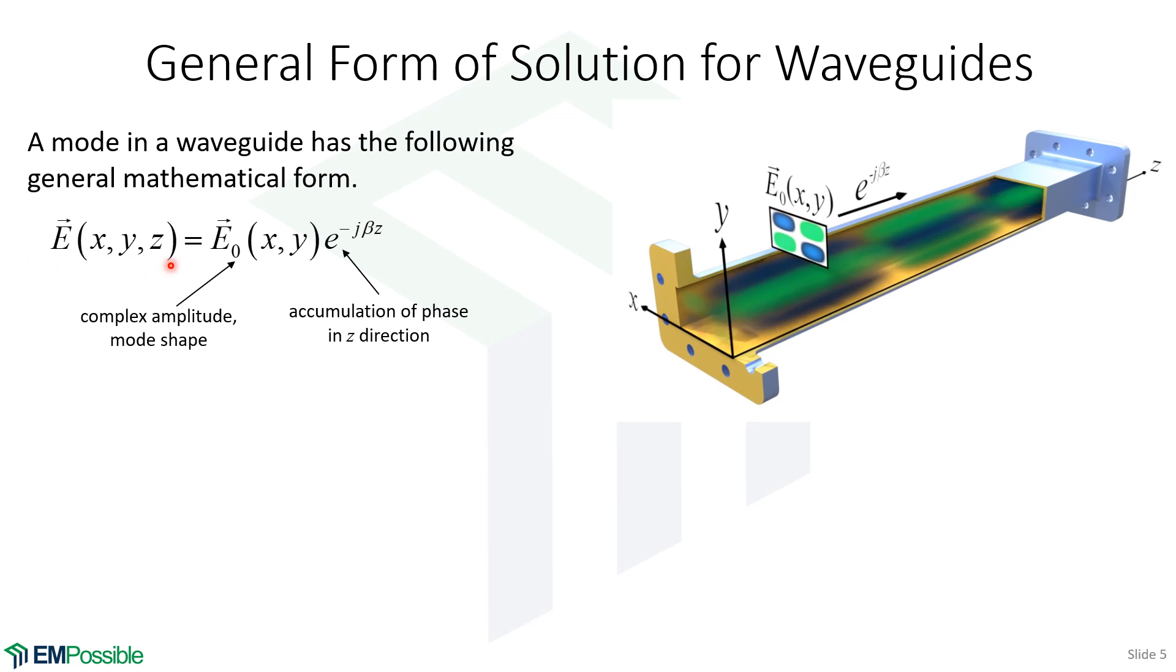So the overall field, whatever that is, is the product of these two things. It's this picture in the cross section of what the fields look like, times e to the minus j beta z, where beta is describing the accumulation of phase in the longitudinal direction.